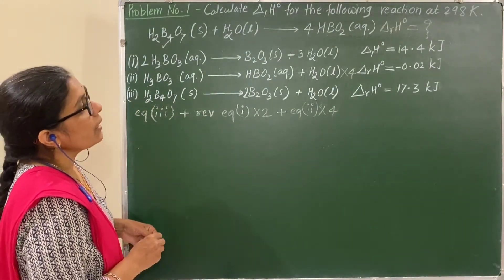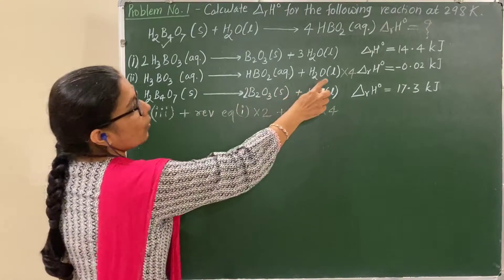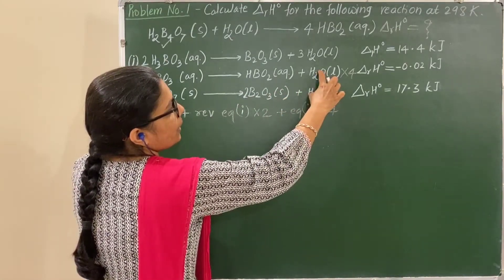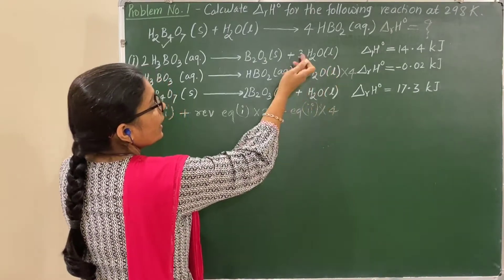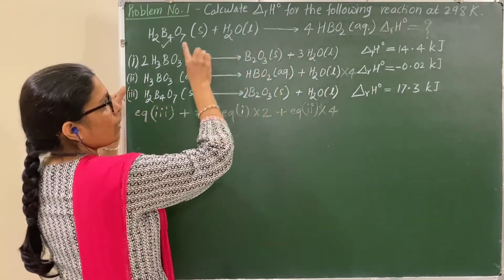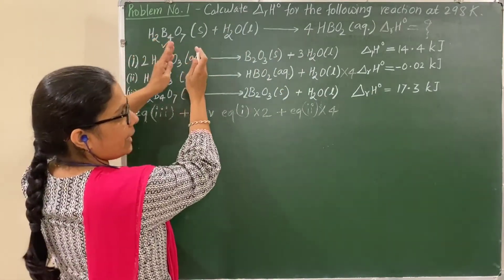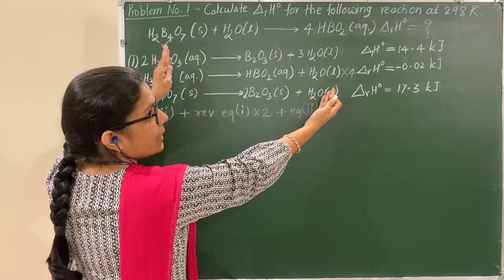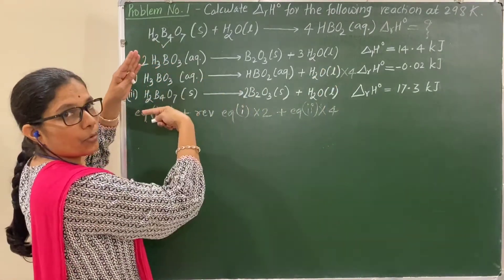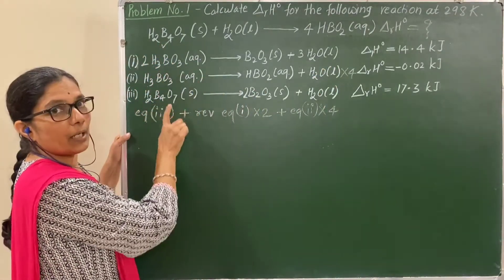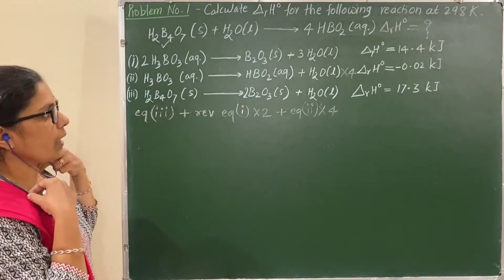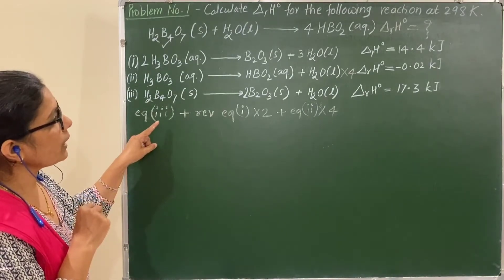Now observe the water balancing: from equation 2 multiplied by 4, there are 4H2O on one side; from equation 3 there is 1H2O; from the reverse of equation 1 multiplied by 2, there are 6H2O on the opposite side. So 5H2O cancels out from the 6H2O, leaving 1H2O remaining on the required side — water is now balanced.